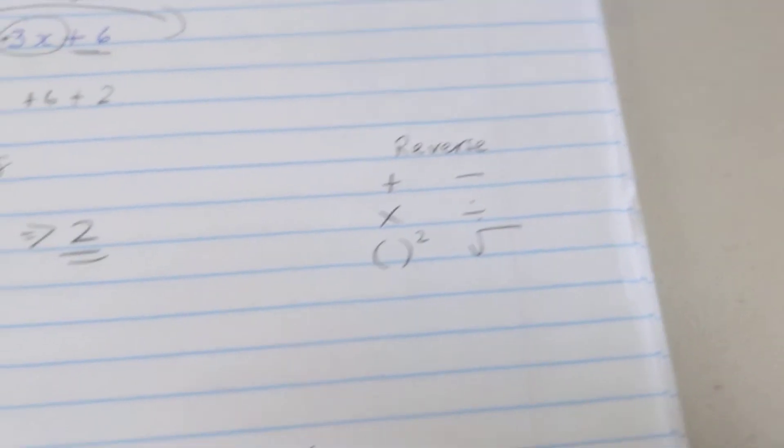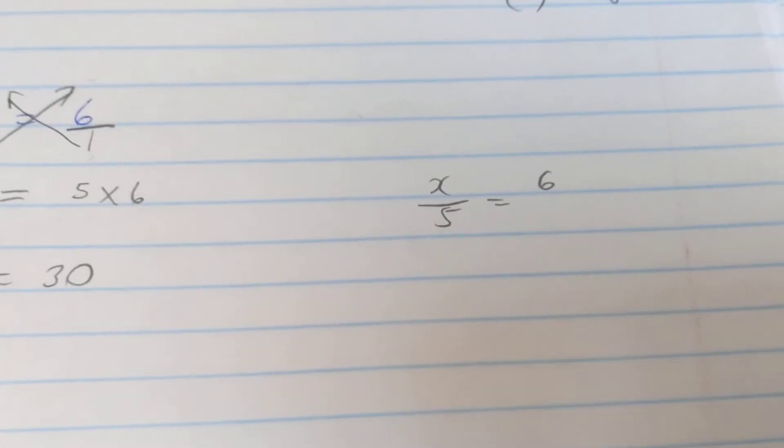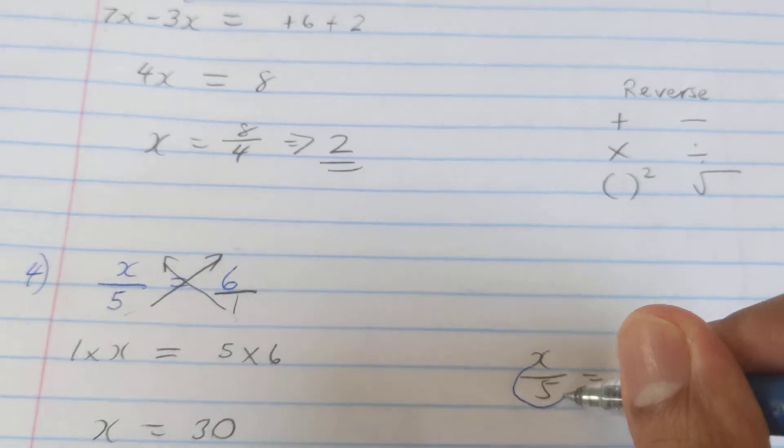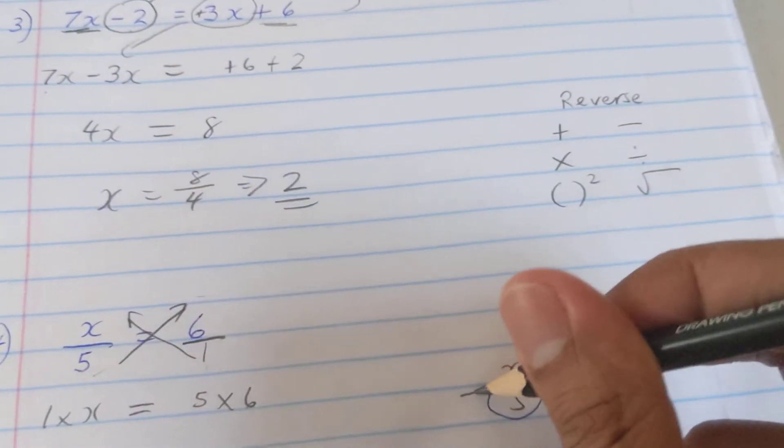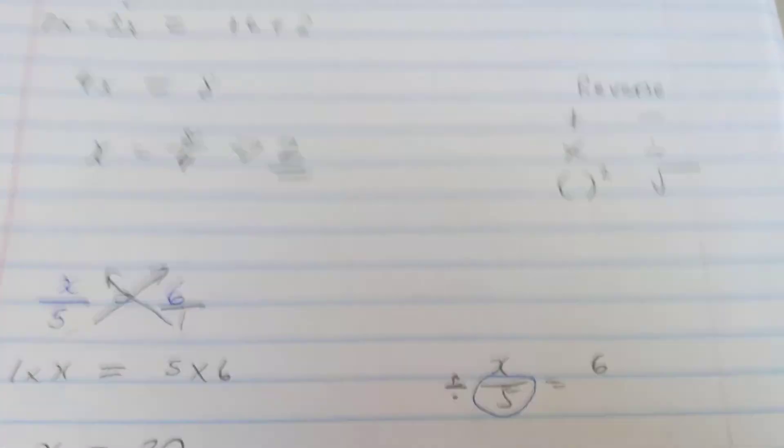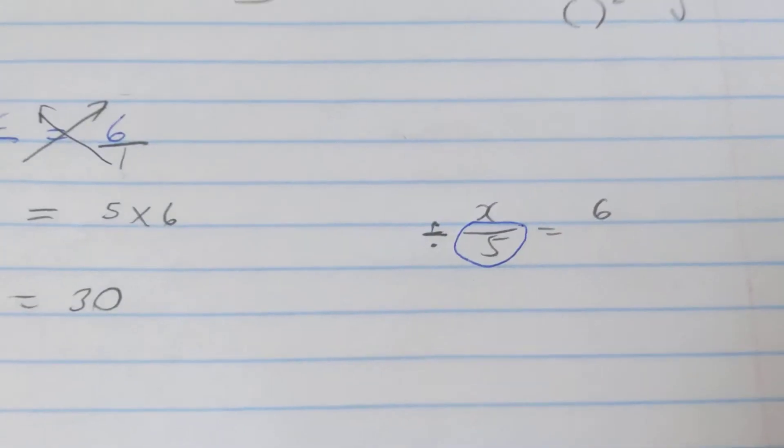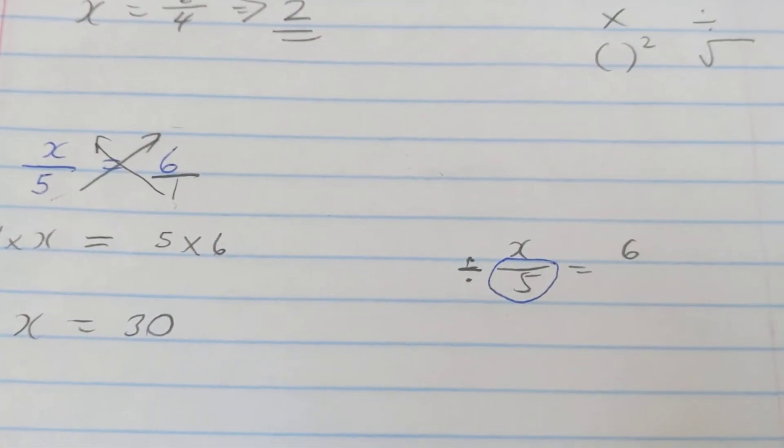I want x by itself. Right now x is not by itself. Right now x is engaged in an operation with 5, and that operation is being divided by 5. So I don't want that divide by 5 to be there because that's what's holding me back. So I have to do the reverse of dividing by 5.